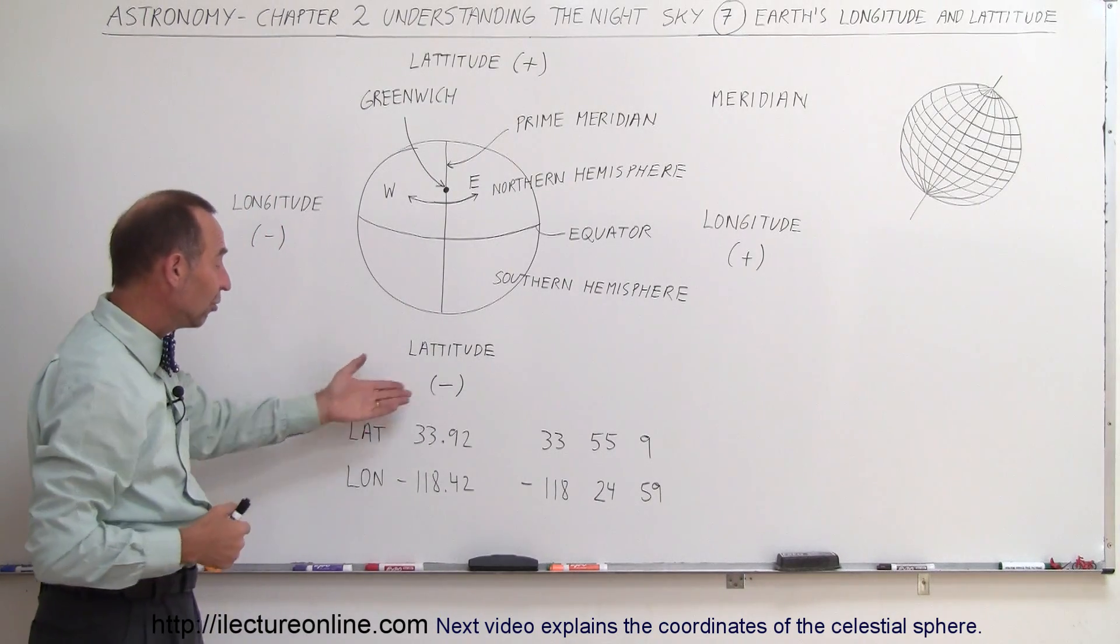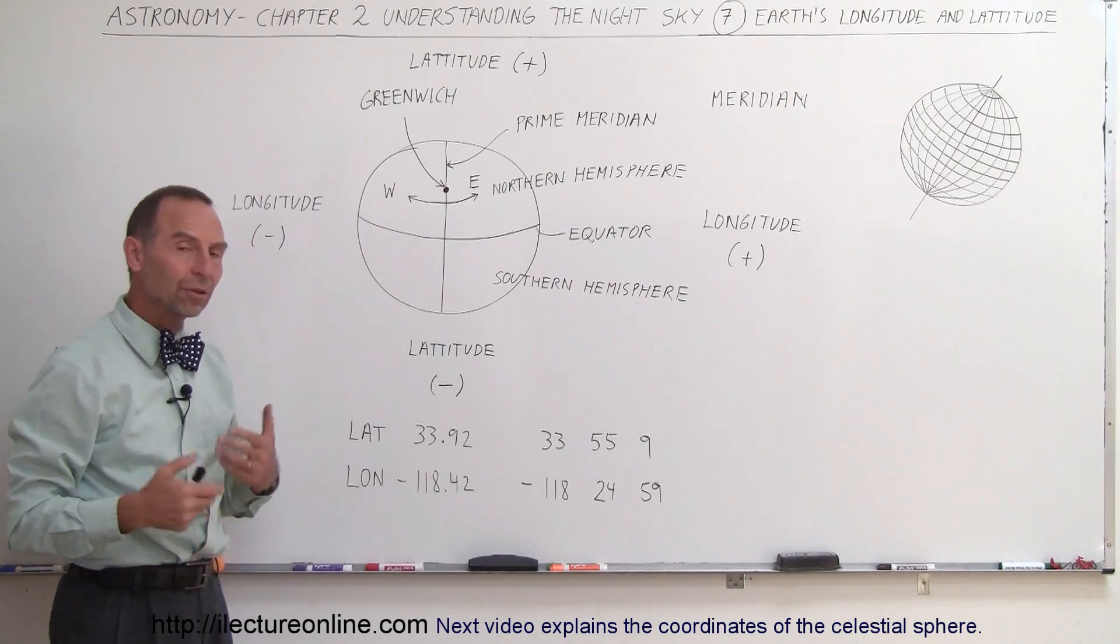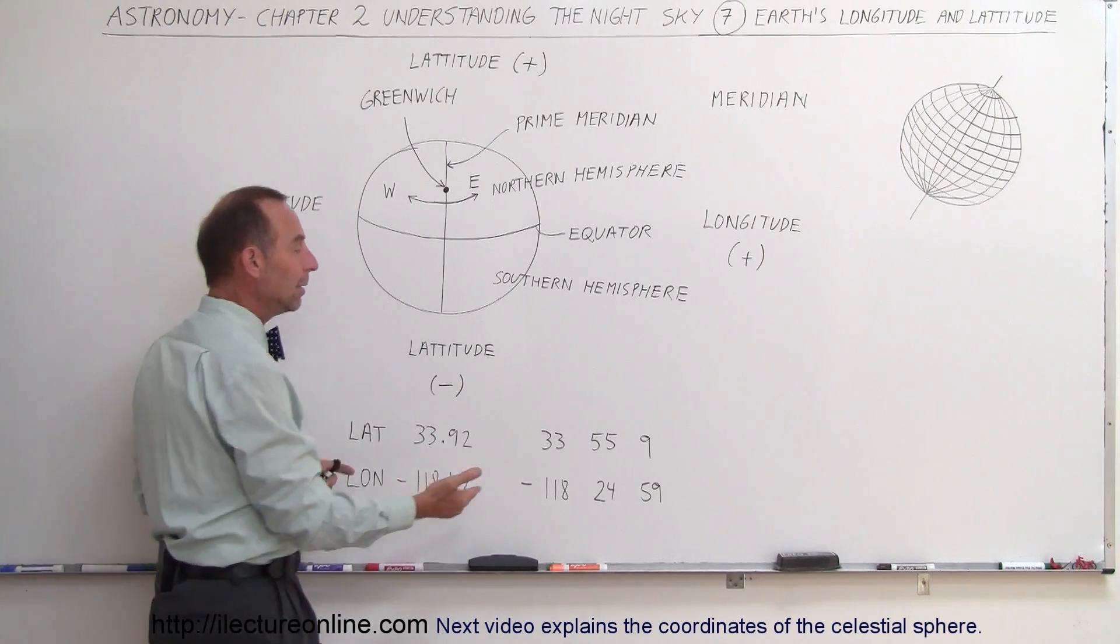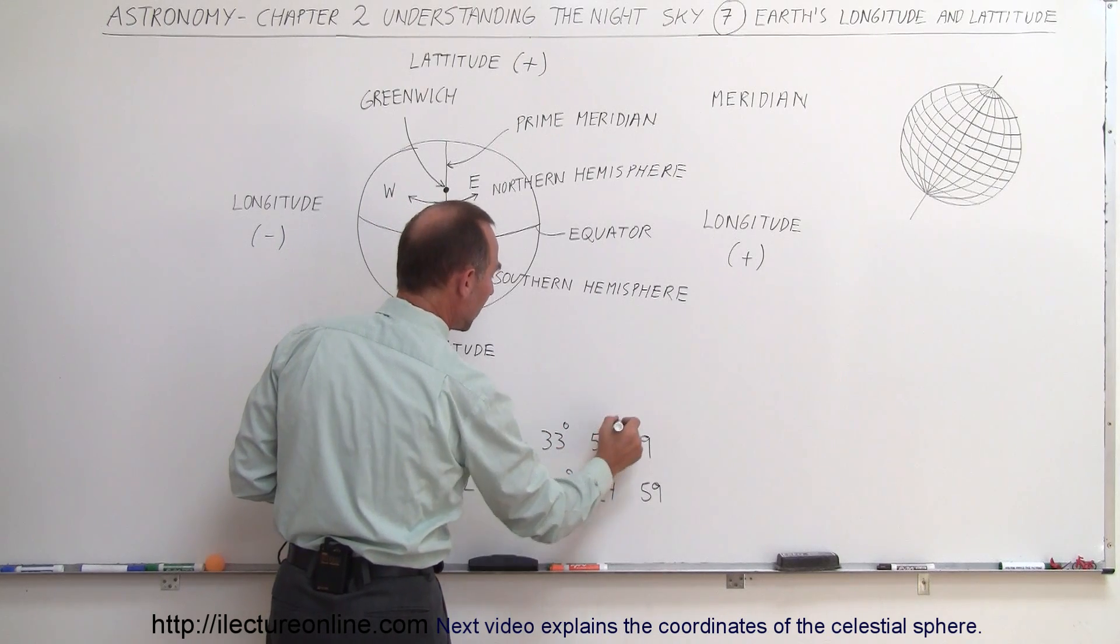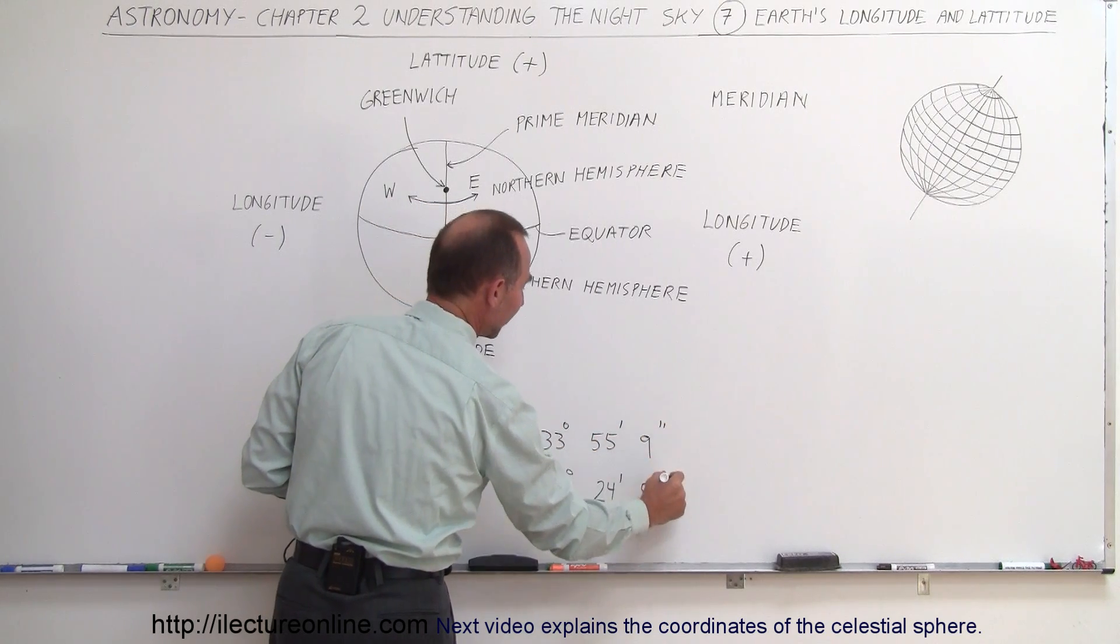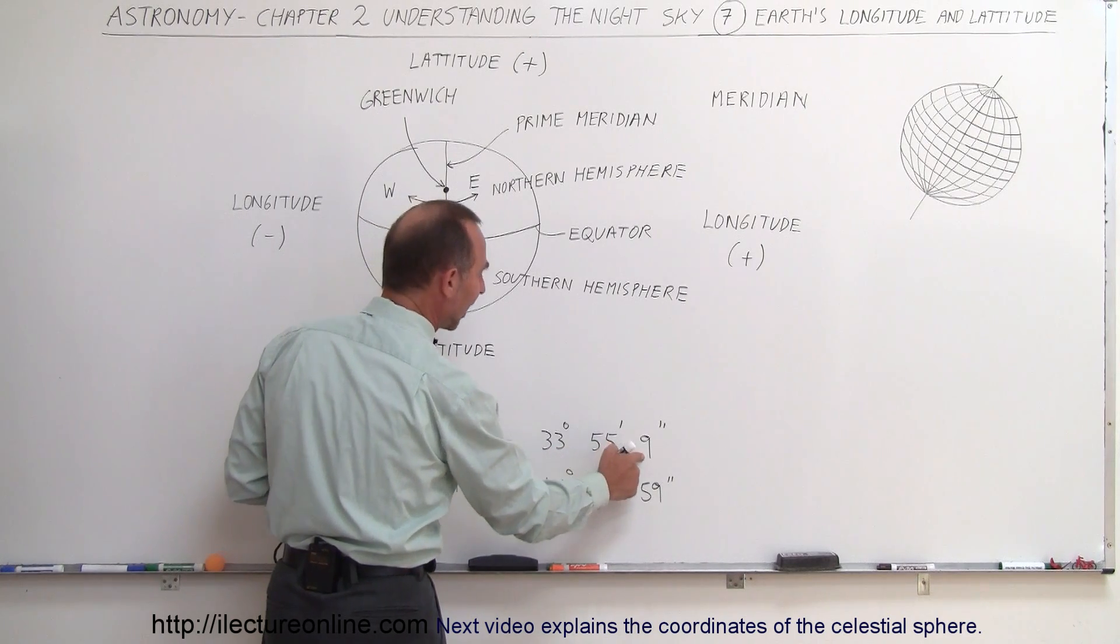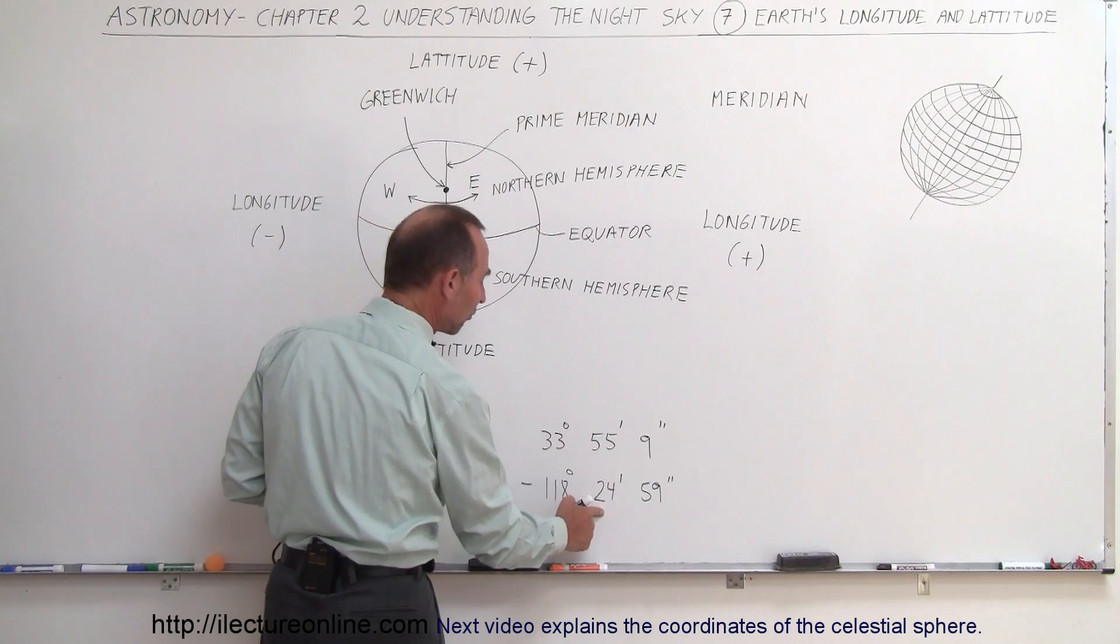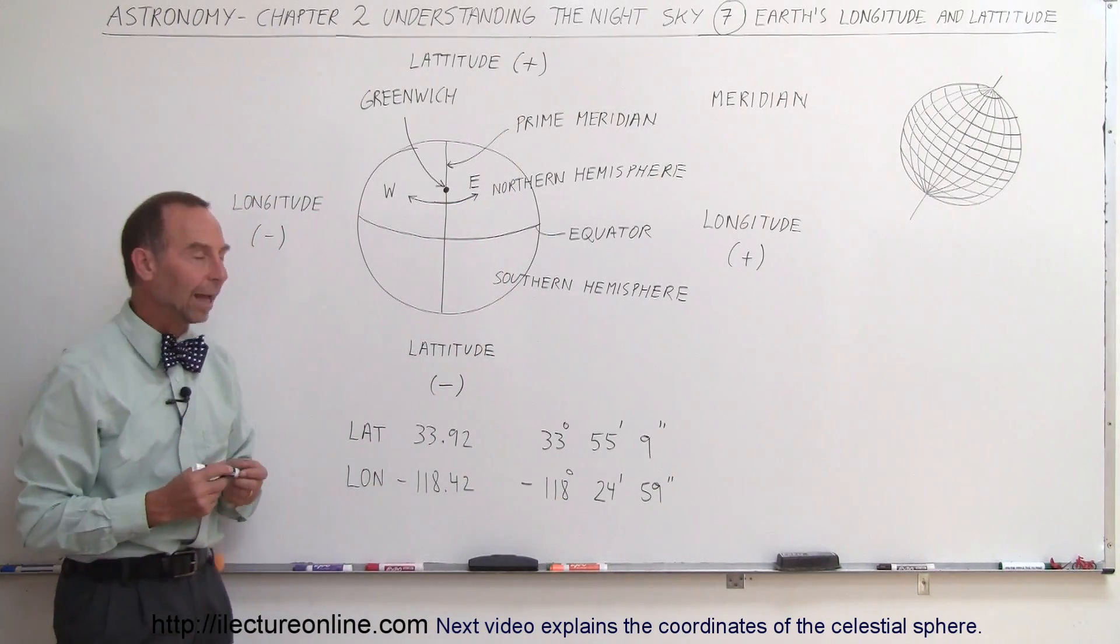Sometimes, and this is typically what they show you in GPS, they show you in decimal format, but they also sometimes will show you in minutes and seconds. So this would be degrees, this would be minutes, and this would be seconds. So 33 degrees 55 minutes and 9 seconds, minus 118 degrees 24 minutes and 59 seconds. In decimal notation, it is equal to that.